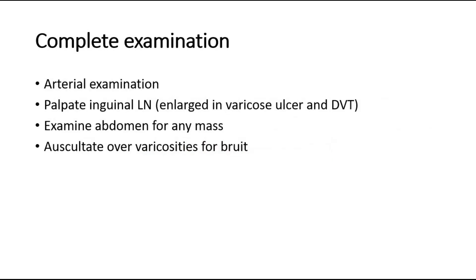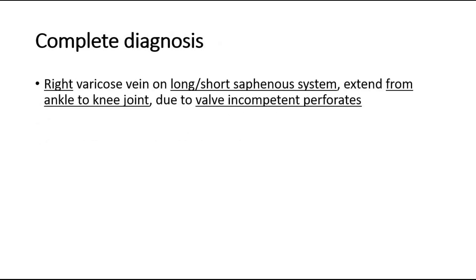To complete the examination, state that you would like to do a thorough arterial examination, palpate inguinal lymph nodes (which may be enlarged in varicose ulcer or deep vein thrombosis), examine the abdomen for any mass causing abnormalities in the venous system, and auscultate over the varicosities for any bruit. When presenting the diagnosis, state the side, whether the long or short saphenous system is involved, the extent of the varicose vein, and which valves are incompetent.